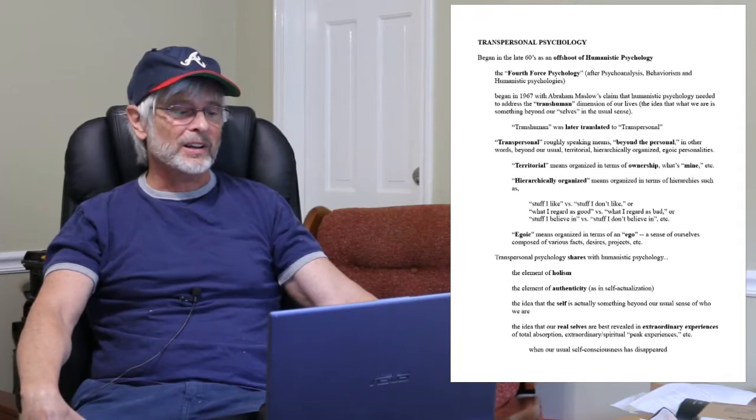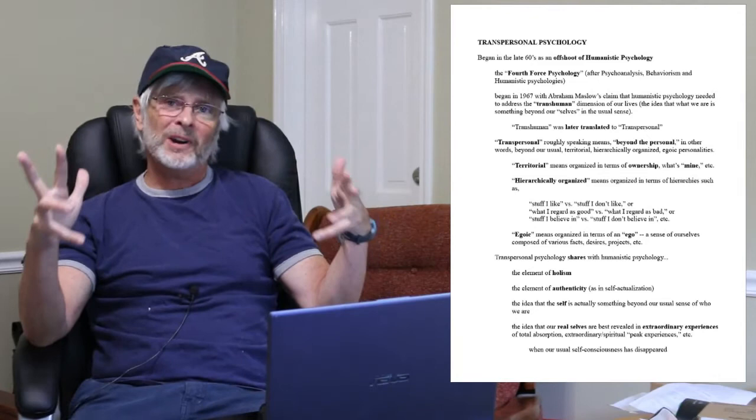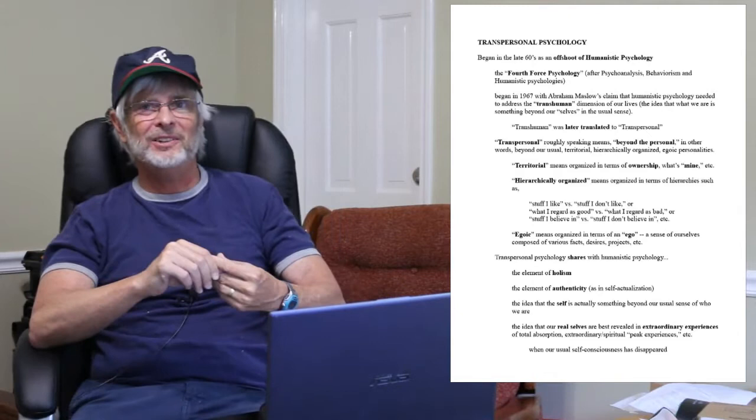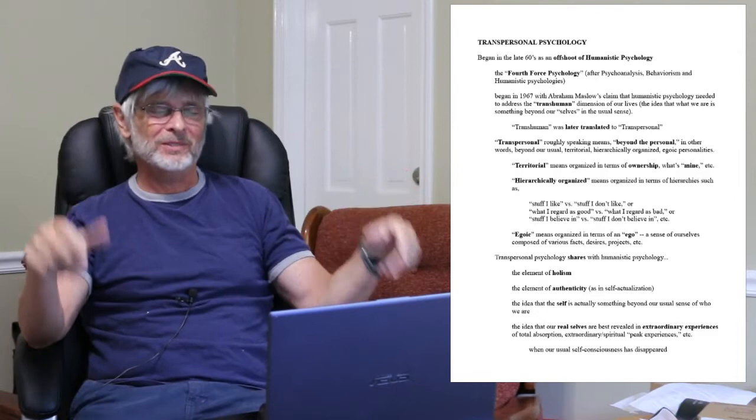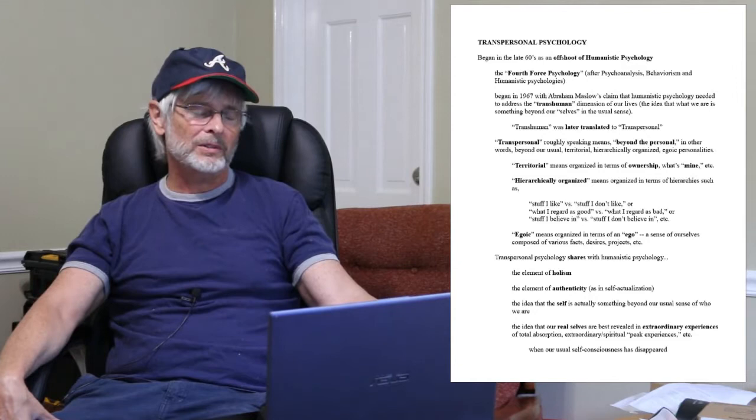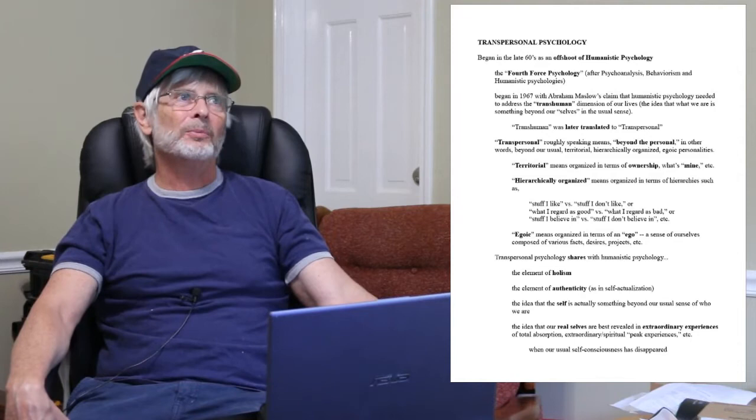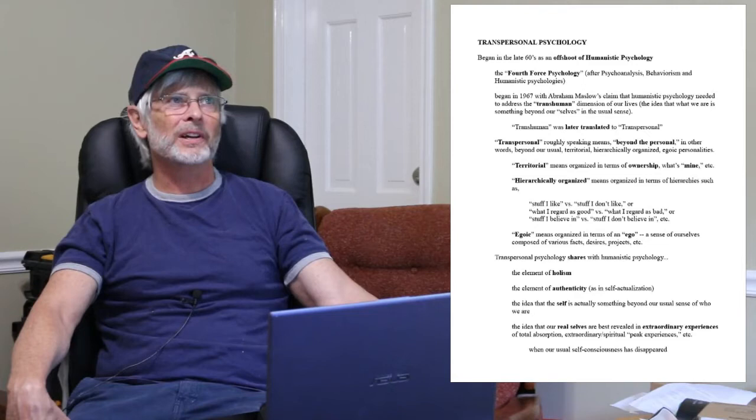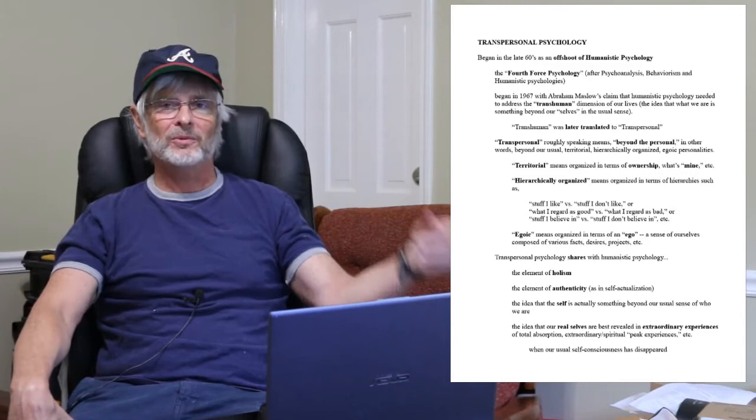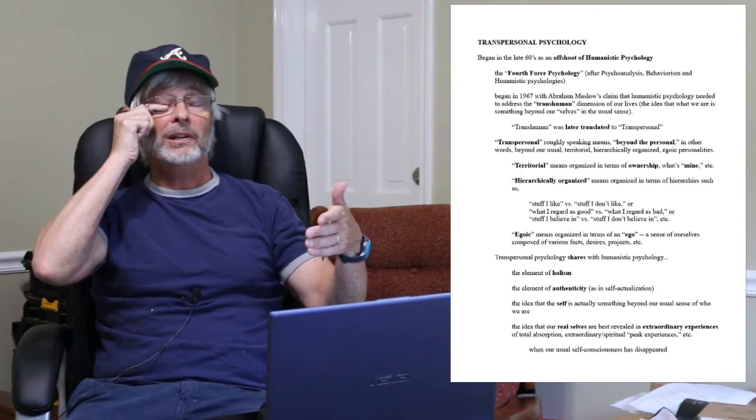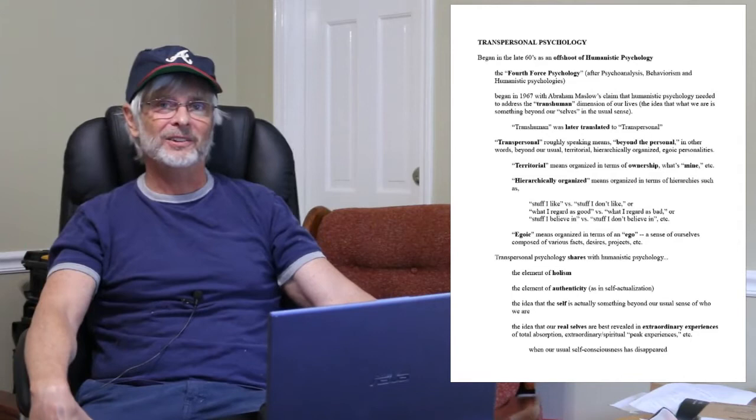And finally the egoic self means organized in terms of ego. These names are pretty straightforward, aren't they? Almost as though if I were to ask you about them on a test you could fairly easily just sort of take the name and sort of unpack it a little bit and you would pretty easily find the correct answer on a test. Not that would be relevant to your life in the future at all. So egoic means organized in terms of ego, our sense of ourselves as composed of various facts, desires, projects, and so on. I think the best way of thinking about the egoic self is like the self as you would describe yourself on something like a resume. That you were born here, here's where you went to high school, here's where you went to college, here's what you majored in, here's what you did, here were your accomplishments, here are your hobbies and so on. Like that kind of fact or factoid driven sense of self.